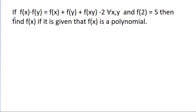In this video, we have given that f(x) times f(y) is equal to f(x) plus f(y) minus f(xy) minus 2, for all x, y, and f(2) is equal to 5. Then we have to find f(x), given that f(x) is a polynomial.